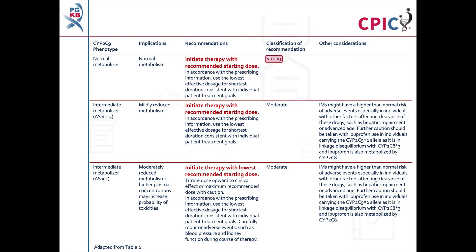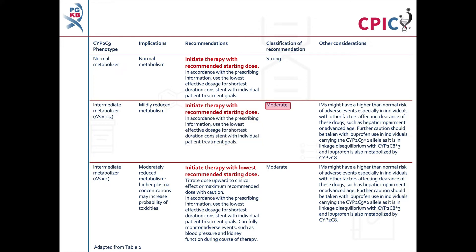Patients with a CYP2C9 intermediate metabolizer phenotype and an activity score of 1.5 will have mildly reduced metabolism of NSAIDs. These patients can begin NSAID therapy using the recommended starting dose; this is a moderate recommendation. CYP2C9 intermediate metabolizers may have a higher than normal risk of adverse events, which can particularly impact patients with other factors that affect drug clearance.